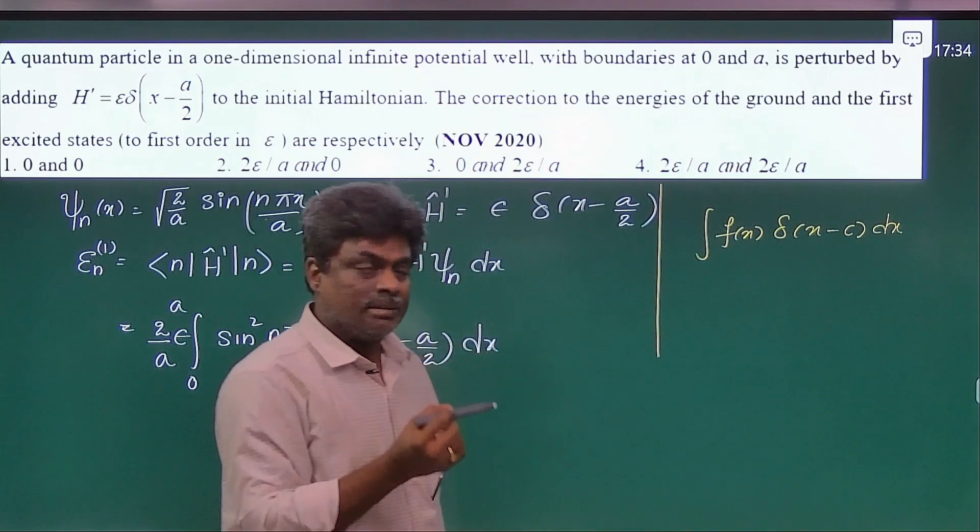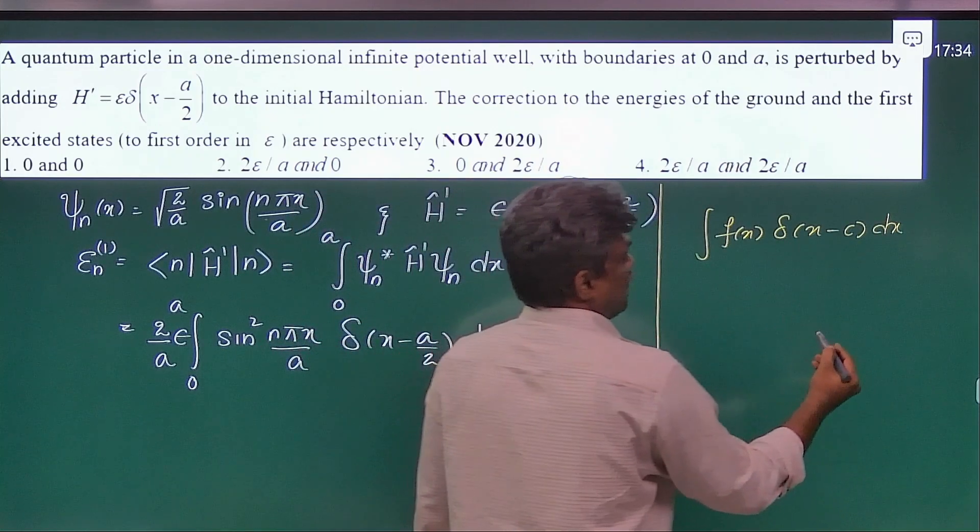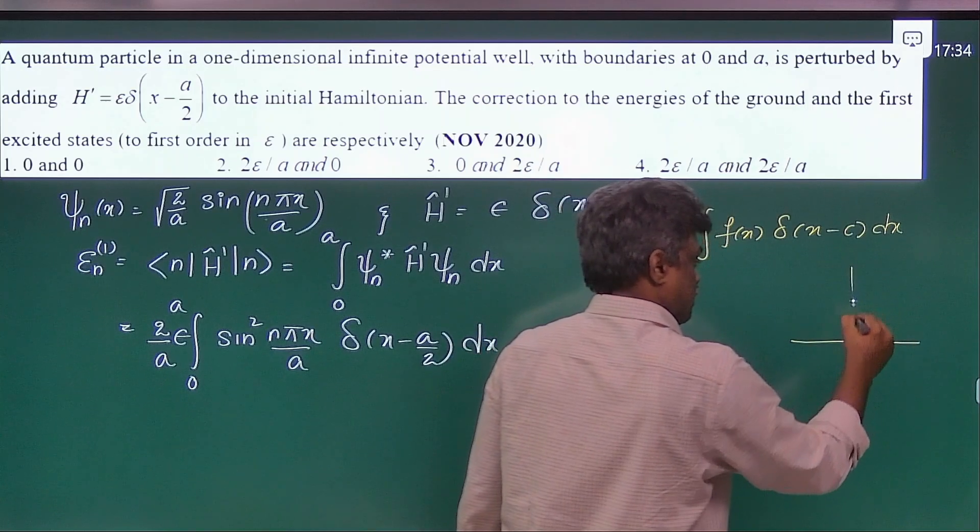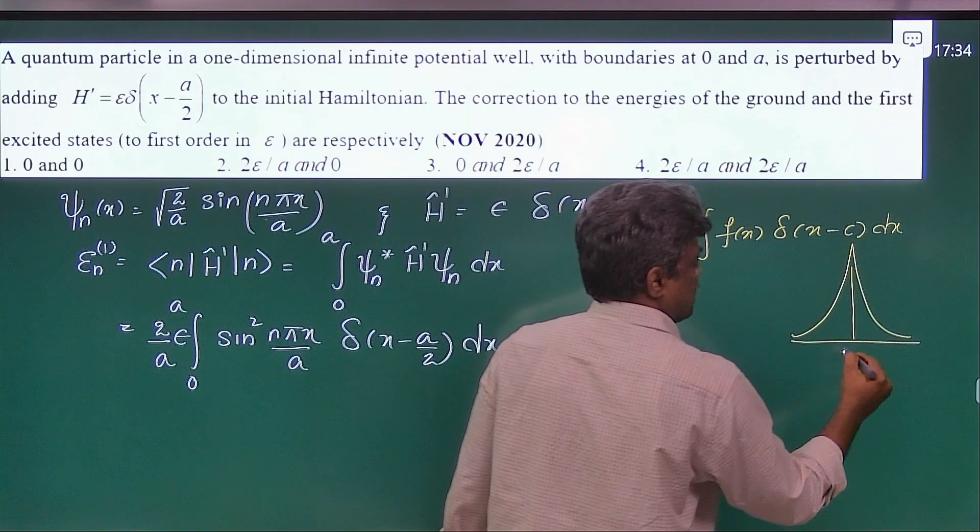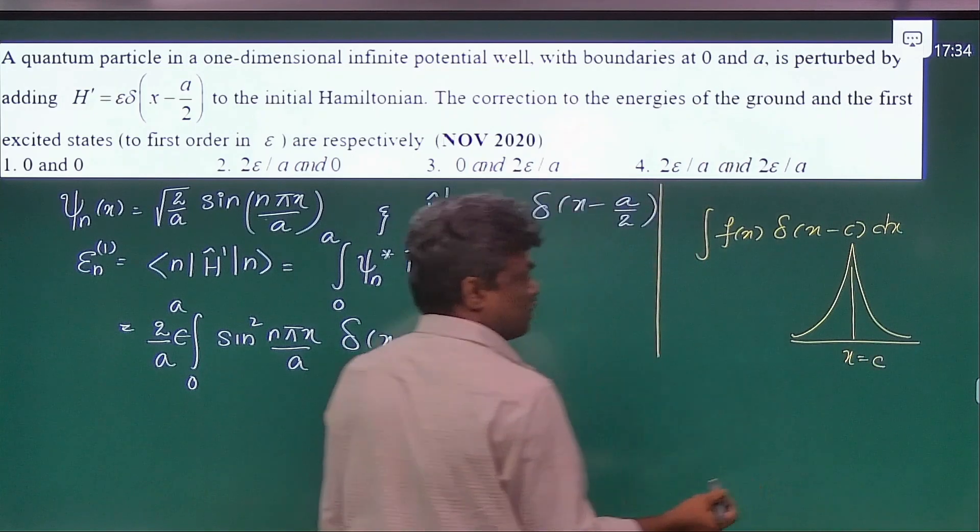Where c is the center for that delta curve. Just like this. So you can take this as the center x equal to c.